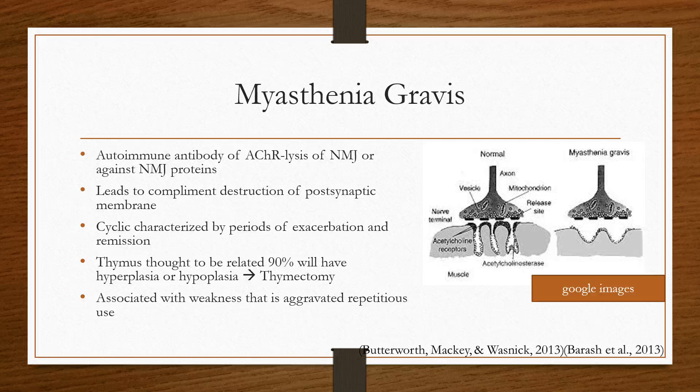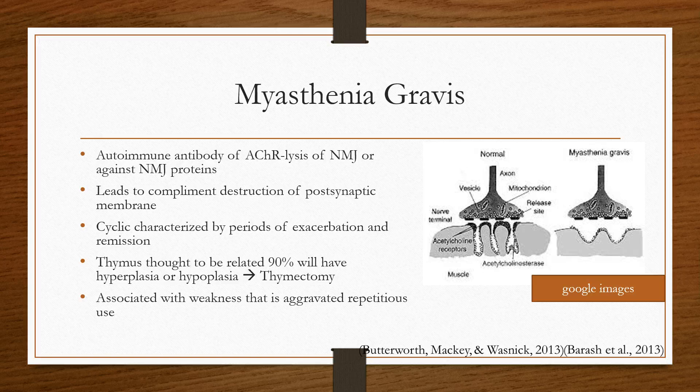This disease is cyclic, meaning patients will have exacerbations and remissions. Different things can exacerbate a patient, such as stress, surgery, heat, and emotional distress. A lot of patients will have problems with their thymus — they'll have hyperplasia or hypoplasia — and one of the many common surgeries for patients presenting with myasthenia gravis is thymectomy.